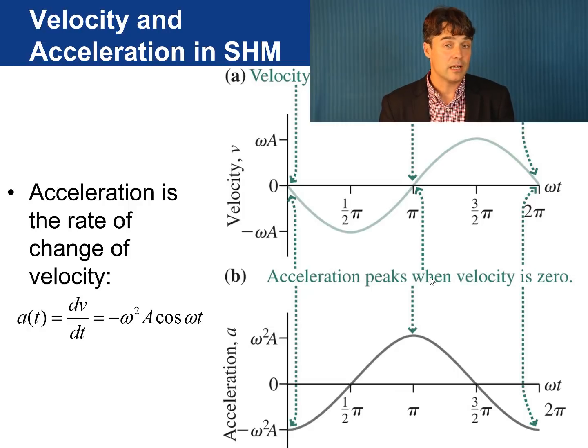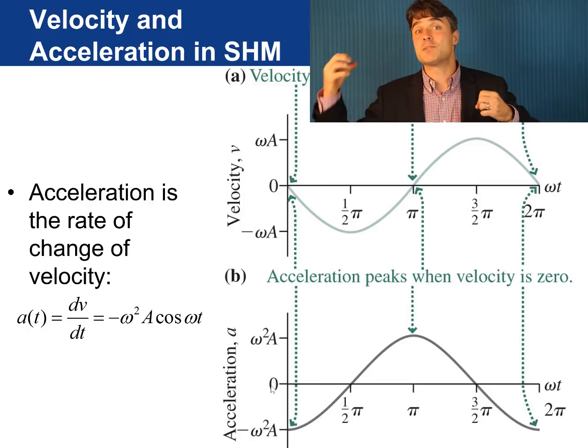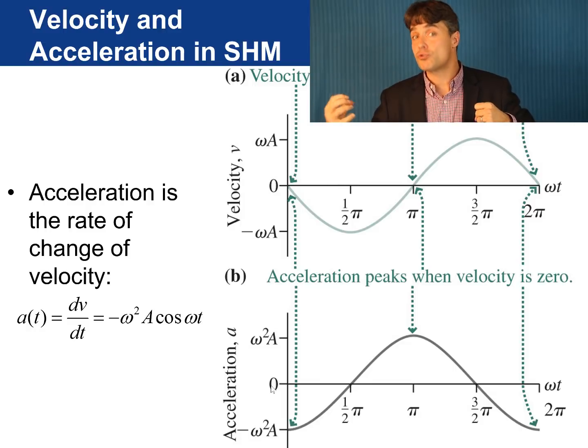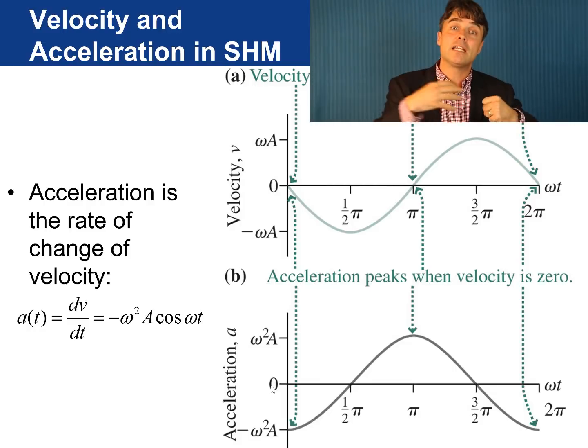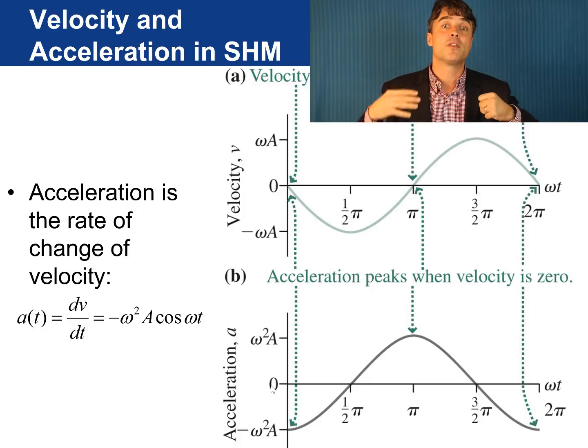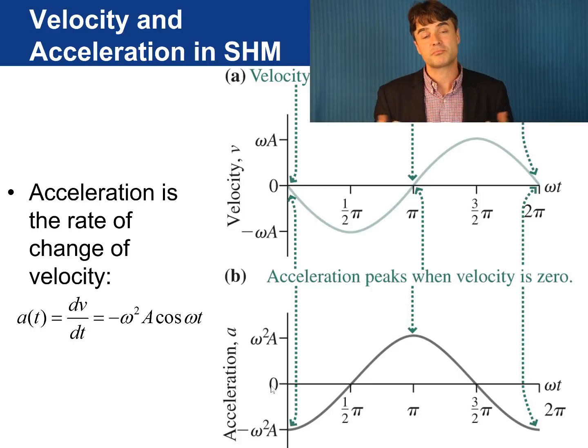And similarly, we can graph the acceleration, which is the slope of the velocity versus time curve. Here we see that when the position was maximum at time t equals zero, the acceleration is at its most negative value. That makes sense because the spring has its maximum stretch at this point and is pulling the mass towards equilibrium with its maximum force.